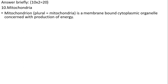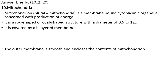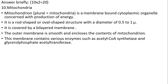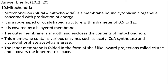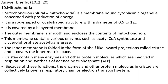Mitochondria: mitochondria is the membrane-bound cytoplasmic organelle concerned with the production of energy. It is a rod-shaped or oval-shaped structure with a diameter of 0.5–2 µm. It is covered by a bilayered membrane. The outer membrane is smooth and contains various enzymes like acetyl-CoA enzymes and glycerol phosphate acyltransferase. The inner membrane is formed in the shape of shelf-like inward projections called cristae and is covered by the inner matrix space. The cristae contain many enzymes and other protein molecules involved in respiration and synthesis of ATP. These enzymes and protein molecules are collectively known as the respiratory chain or electron transport system.